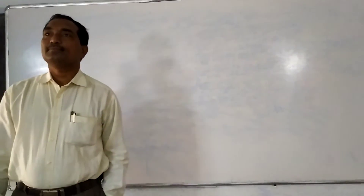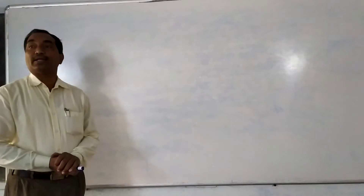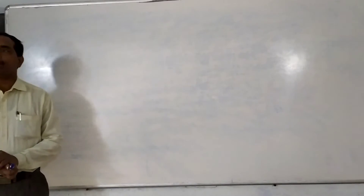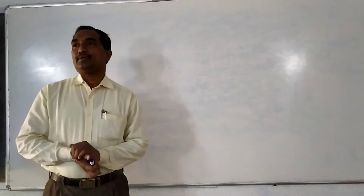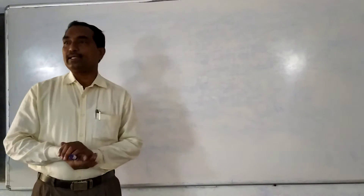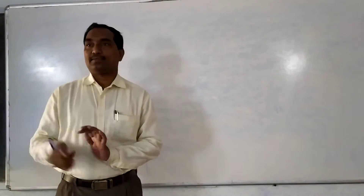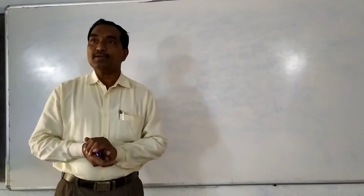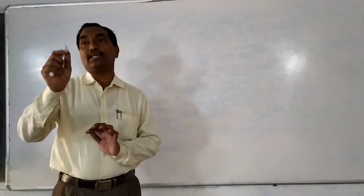Good morning all. Good morning sir. So we are discussing about the diffraction grating. A diffraction grating consists of N number of slits. When a light ray is incident on the diffraction grating, there are bright and dark bands, which can be observed on the screen or by using a telescope.